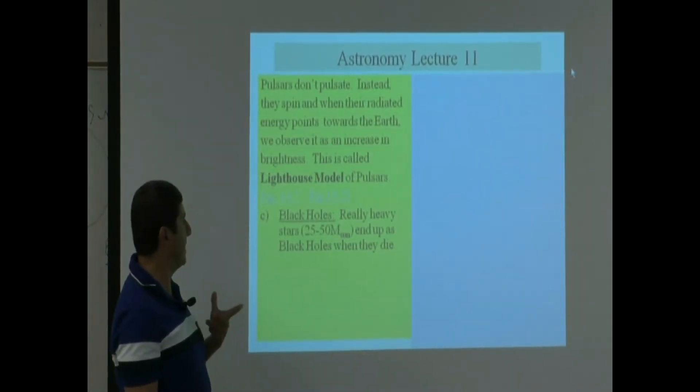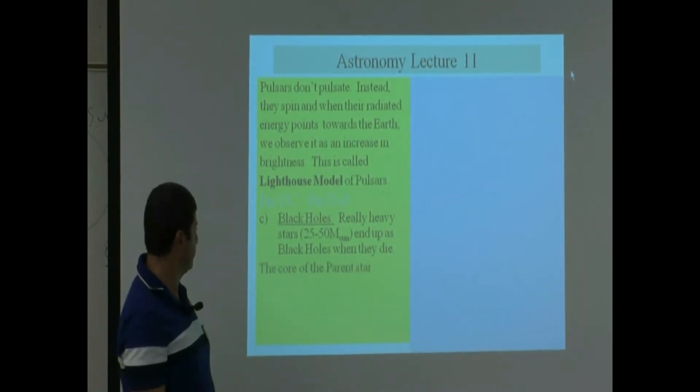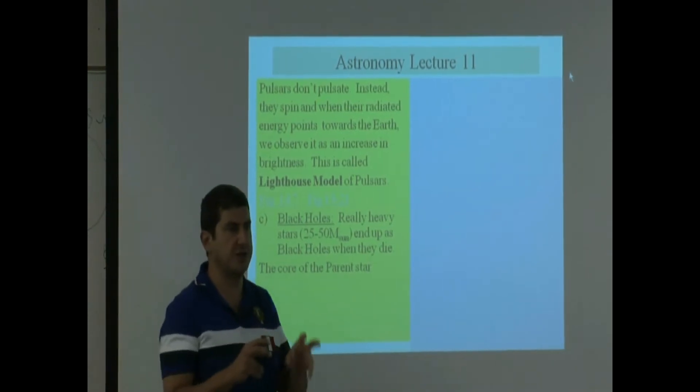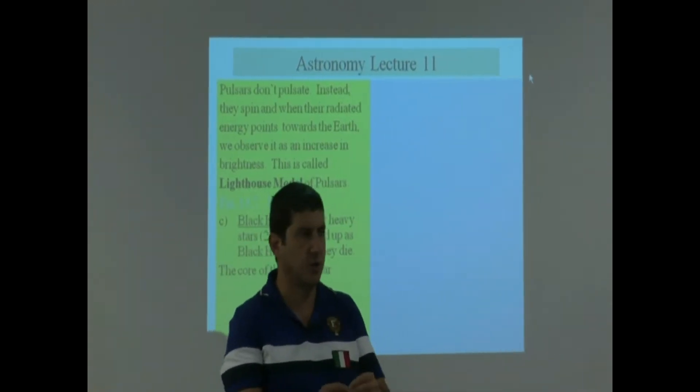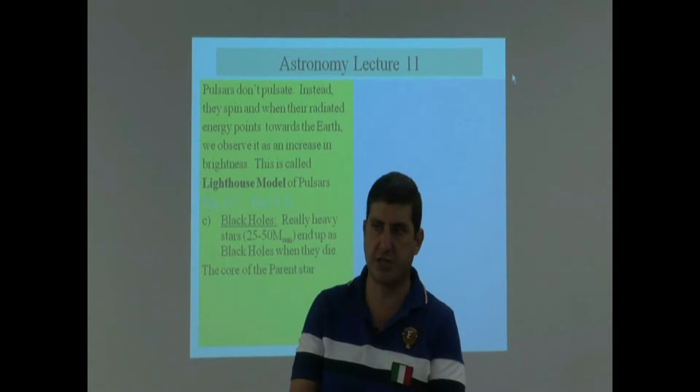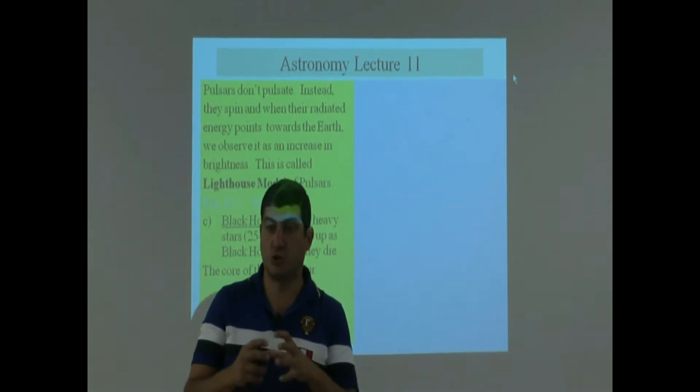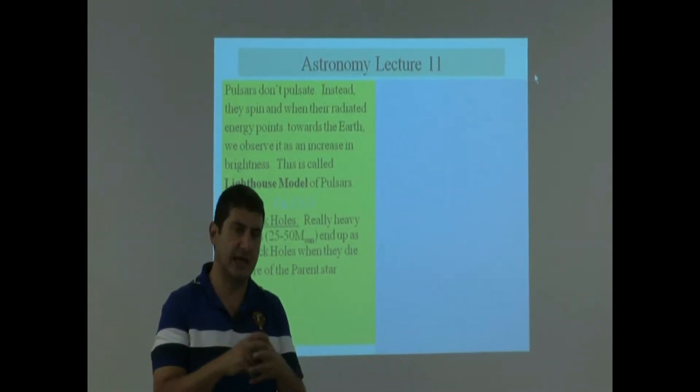Really heavy stars, roughly between 25 to 50 solar mass. That means really supermassive. When they die, they end up as a black hole. What happens is this: when the star is dying towards the end of its state, the core of the star collapses, collapses, collapses. And because the core is so heavy, nothing stops that collapse.